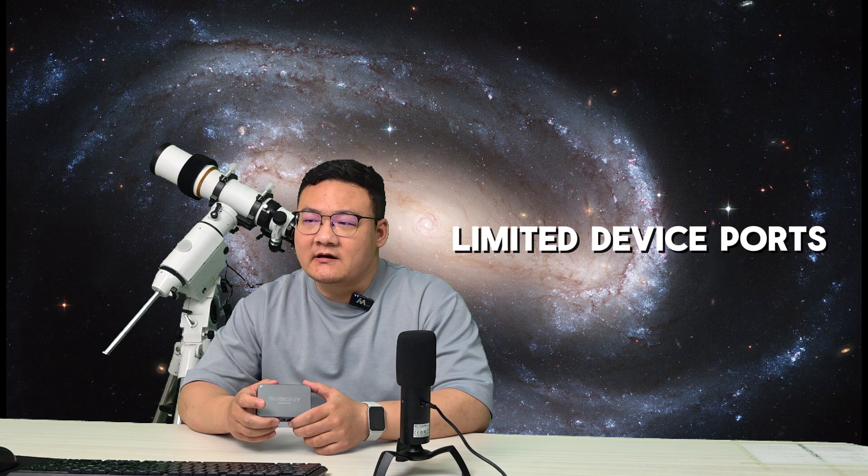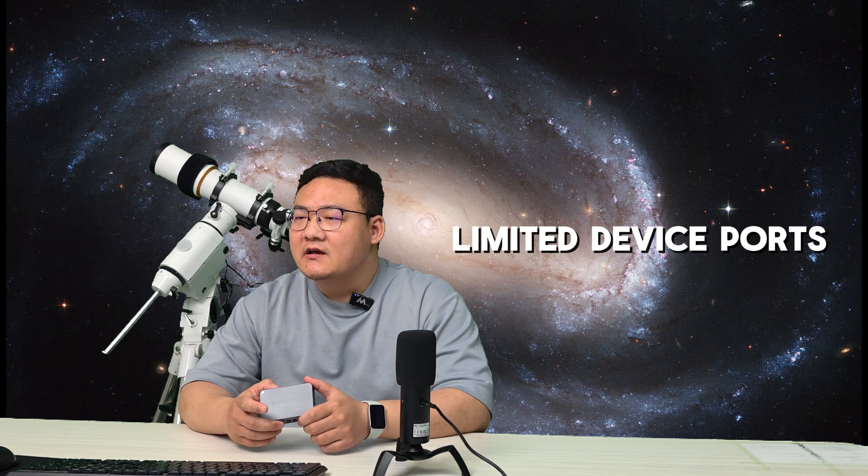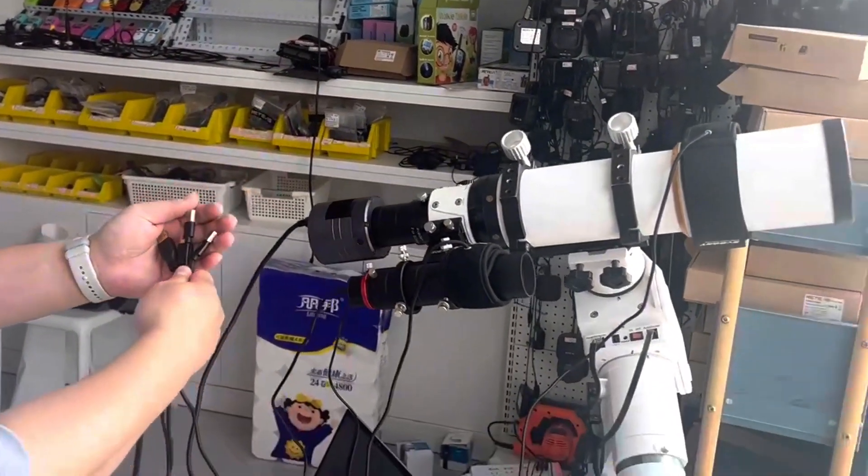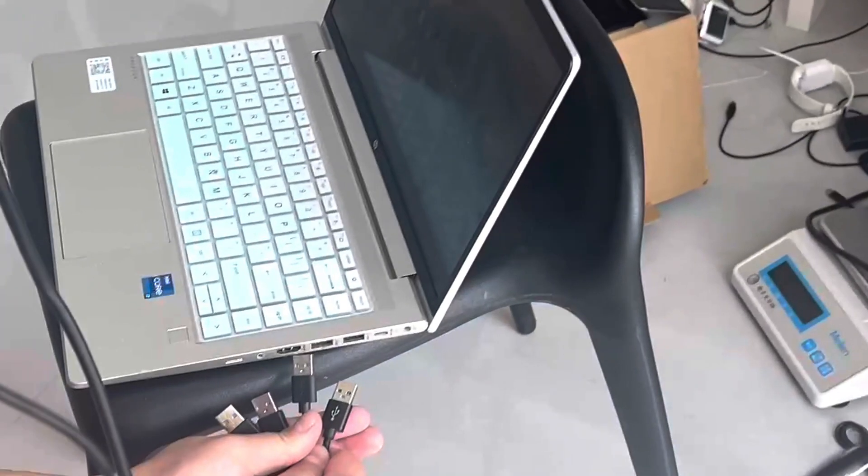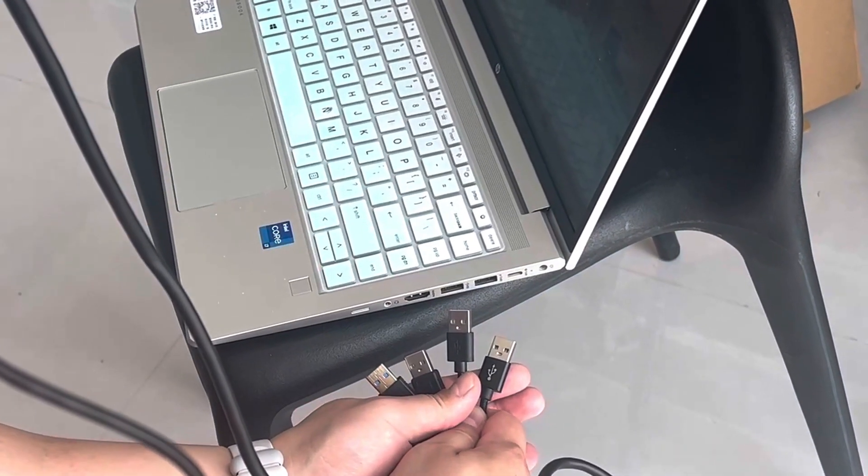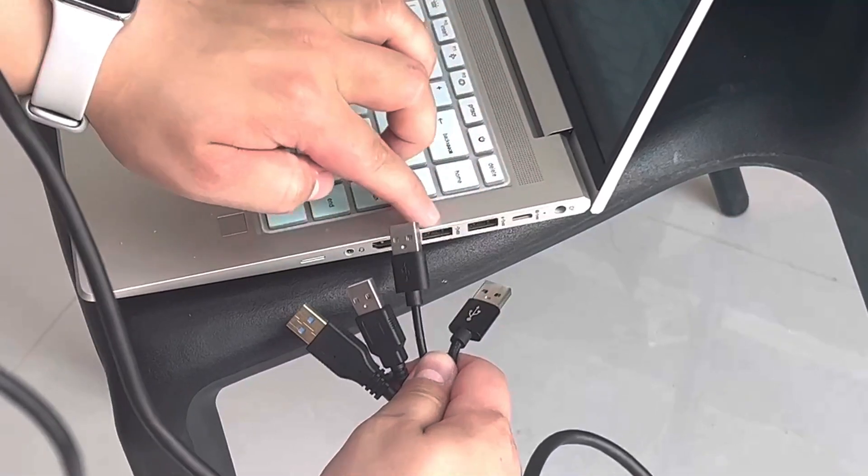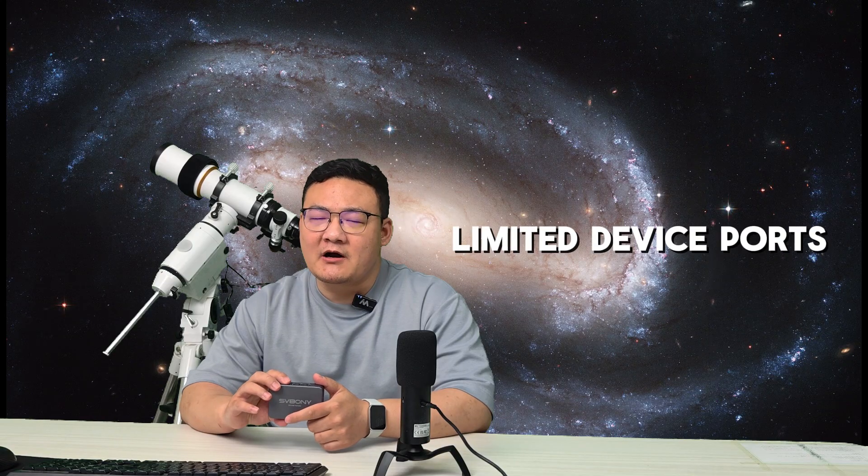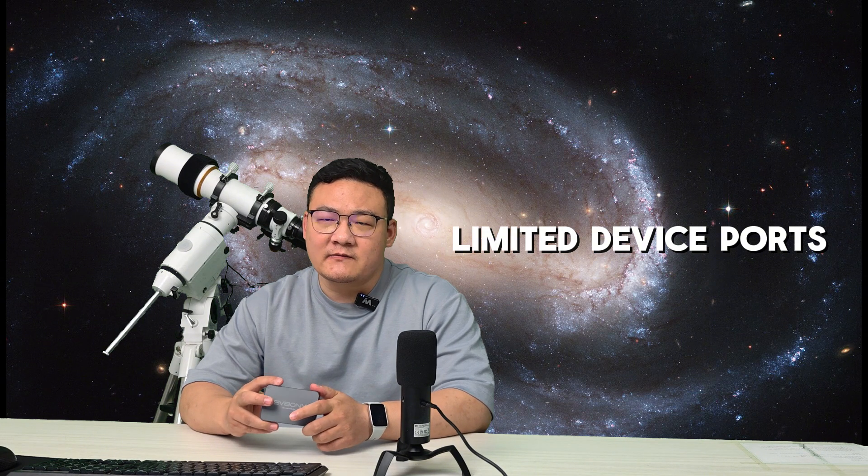First, the number and types of ports provided by the equipment are limited. If you are using just a computer as the controller, you will find that not all of your device cables can be connected with your computer. You can use a PC hub station to solve this problem, but it's not a perfect solution. Someone may suggest using an astronomy controller, but it is mainly focused on imaging rather than power management. Using a PC as a controller is still the normal situation.